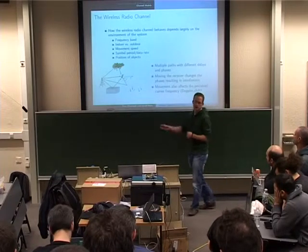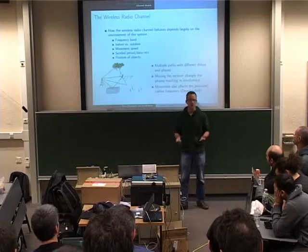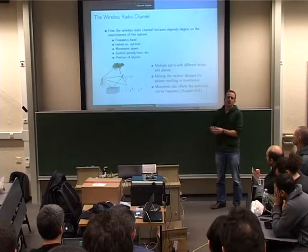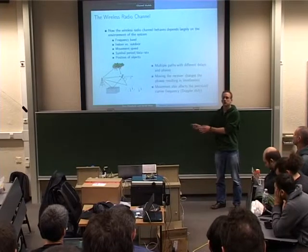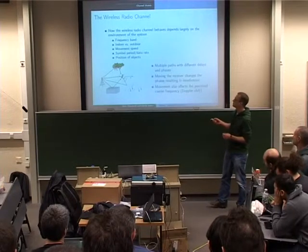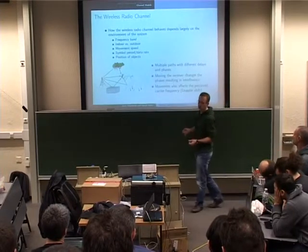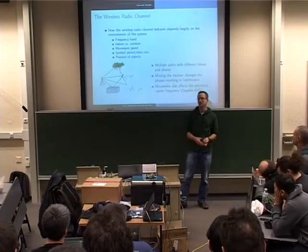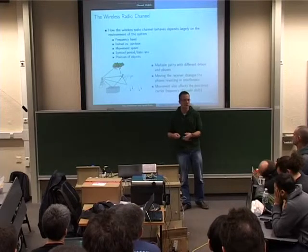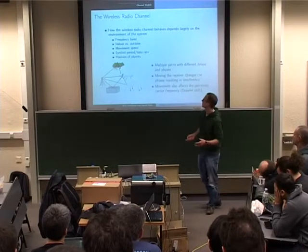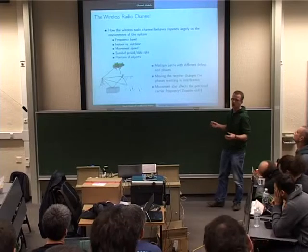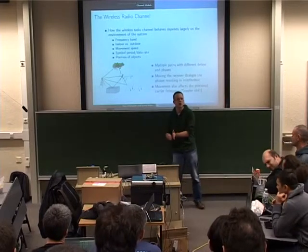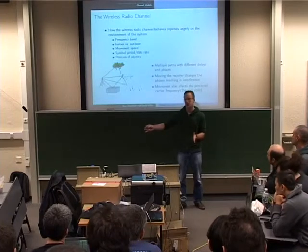Movement speed also matters — whether you're on foot or driving in a car affects the channel. Data rate matters too: if the symbols you're transmitting are very short, you can't transmit as much data; if they're long, that makes a difference as well. The position of surrounding objects also plays a role — whether you're surrounded by tall buildings or out in an open space affects how the signal propagates.